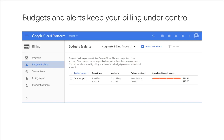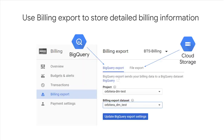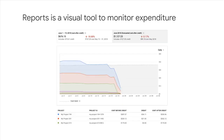Billing export allows you to store detailed billing information in places where it is easy to retrieve for external analysis, such as a BigQuery dataset or Cloud Storage bucket. Reports is a visual tool in the console that allows you to monitor expenditure based on a project or services.